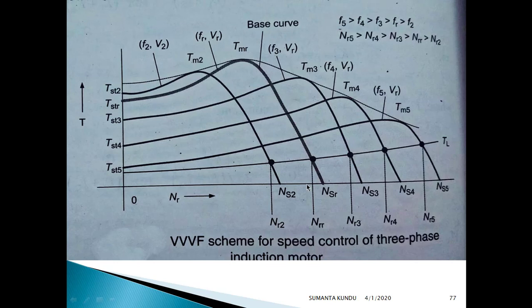Above the base speed, it is the variable torque and constant power zone. Here we have shown a set of speed-torque curves for the three-phase induction motor for different supply frequency variations with V/F constant. When the speed crosses beyond the base speed, the motor torque reduces — as frequency increases, torque reduces further.